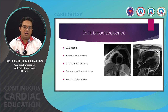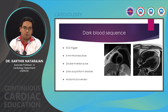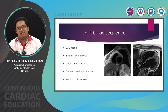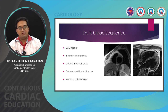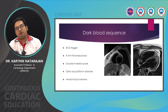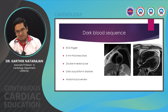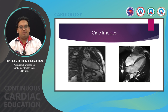Dark blood sequences are spin echo sequences. You use an ECG trigger with 8 mm thick slices. You can apply a double inversion pulse, or a triple inversion pulse if you want to null fat. Data acquisition is in diastole. These are predominantly used for anatomical detail, good tissue borders, and tissue characterization.